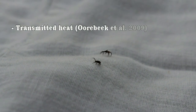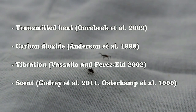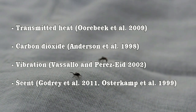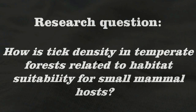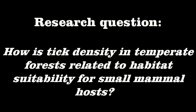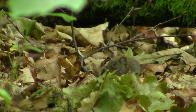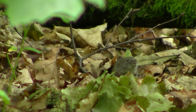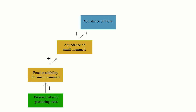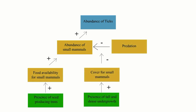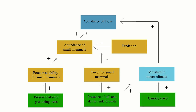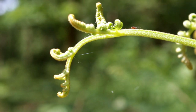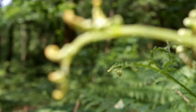Ticks can sense animals by different mechanisms such as transmitted heat, carbon dioxide, vibration of the vegetation, and by scent. To examine the relative importance of these mechanisms, the following research question was formulated: how is tick density in temperate forests related to the habitat suitability for small mammal hosts? It is hypothesized that tick densities are higher in forests providing suitable habitat for small mammals, since these animals are important hosts for ticks in their nymph stadium. Ticks would prefer locations with vegetation structure due to increased chances of contact with a host.